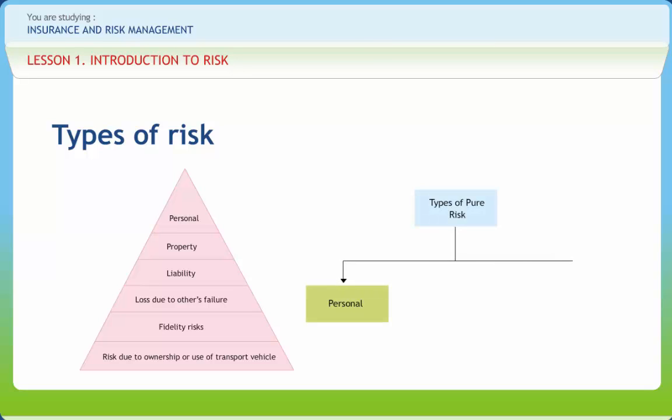In personal risk, there are four basic types of risk which a person faces. There is a vast market for insuring such risk like premature death, dying too early, dependent old age, dying too late, sickness or disability and unemployment.